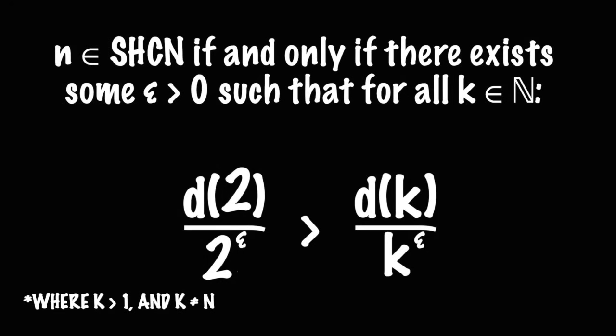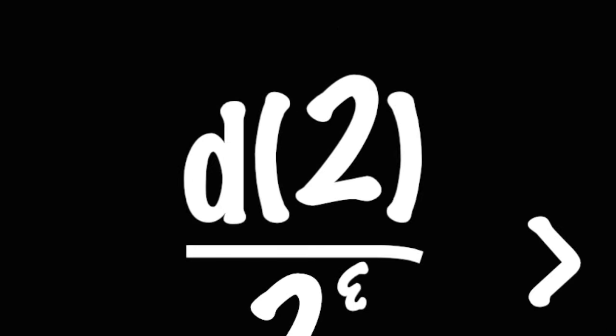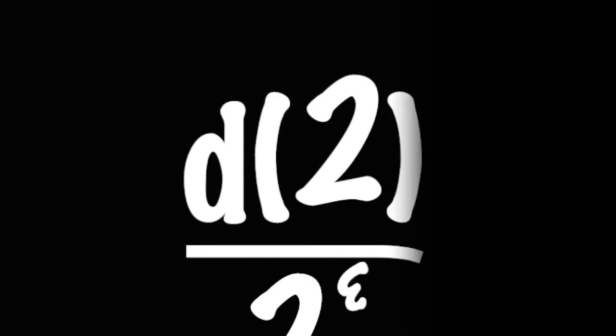So that means that if 2 really is an SHCN, then we should be able to find some epsilon greater than 0 such that d(2) over 2 to the epsilon will be greater than d(k) over k to the epsilon no matter what we use for k. This function here, d, is just the divisor function. All that it does is it counts up how many divisors a number has.